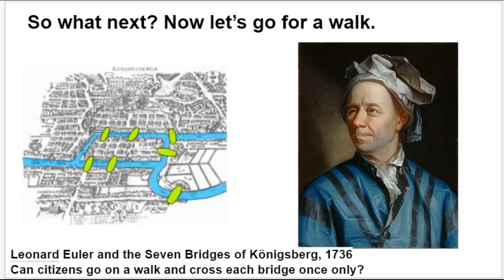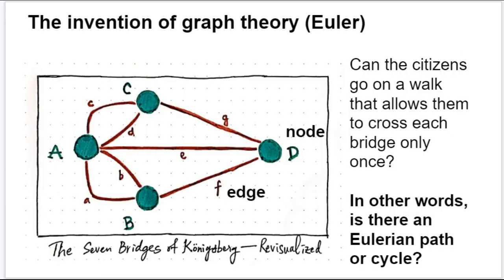Well, Euler came up with the idea of making a graph to depict this problem. And here's a version of Euler's famous graph. So here's the Seven Bridges of Königsberg expressed as a graph.